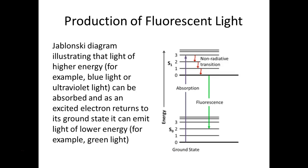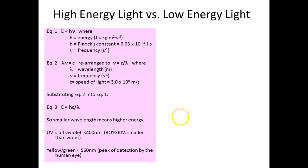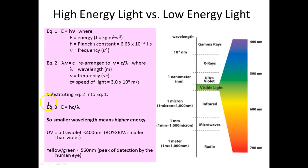Here's the short version of how fluorescence works: when UV light shines on the organism, it excites electrons — moves them to a higher energy state. When they bounce back to the ground state, they emit light. Depending on the proteins involved determines what color of light is emitted, based on how far the electrons travel. We're absorbing UV light, exciting electrons, and when they return to ground state that creates fluorescence. This can even be calculated mathematically.